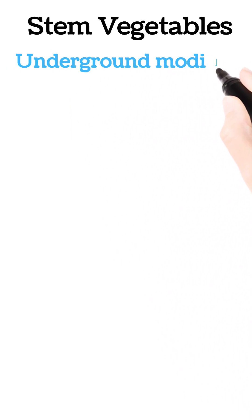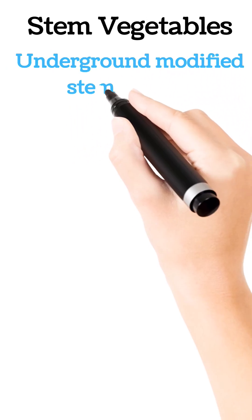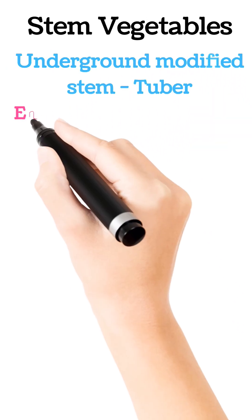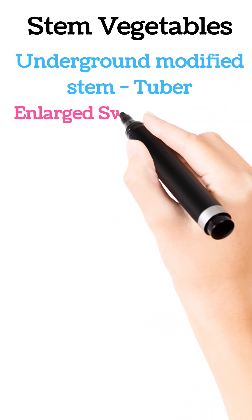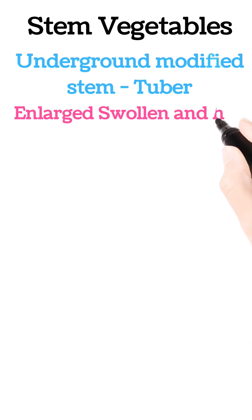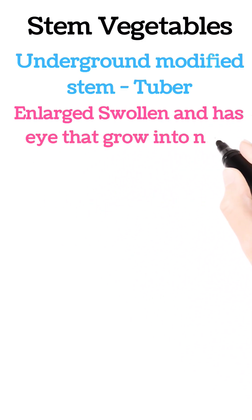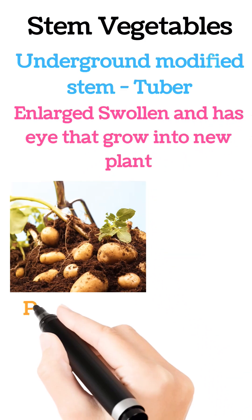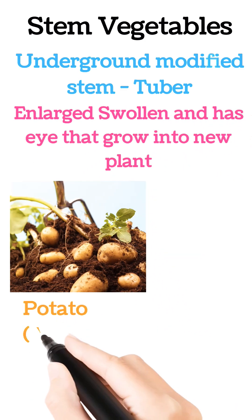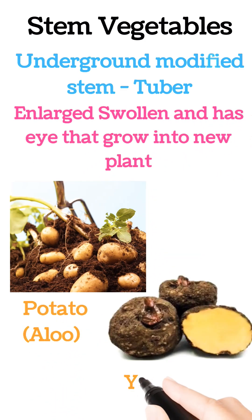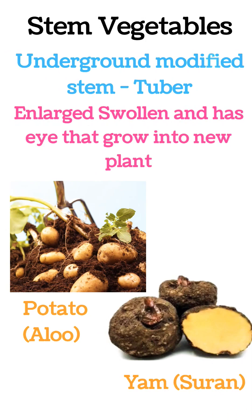The third type of underground modified stem is tubers. Tubers are enlarged and swollen, and have an eye that can grow into a new plant, like potato, yam or sooran.